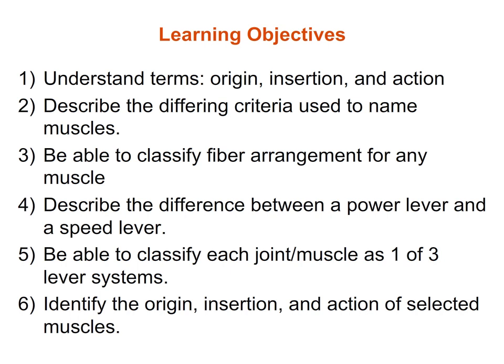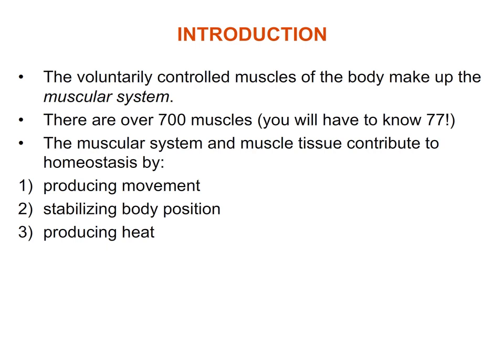If you remember back to the last lecture, we talked about the three different types of muscle: skeletal muscle, cardiac muscle, and smooth muscle. Today we're going to focus on the muscular system. An organ system consists of organs — structures made up of multiple tissue types. So today we're going to be talking about skeletal muscles, which are made up of muscular tissue, connective tissue, nervous tissue, and so on.